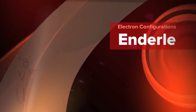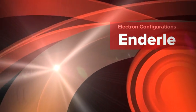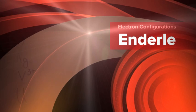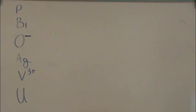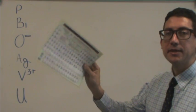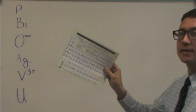It's time to do some electron configuration problems. We're going to do a few examples, and I picked some problems that have a few exceptions you should be aware of. In the meantime, while you're getting ready to see me do the problem, grab your periodic table.